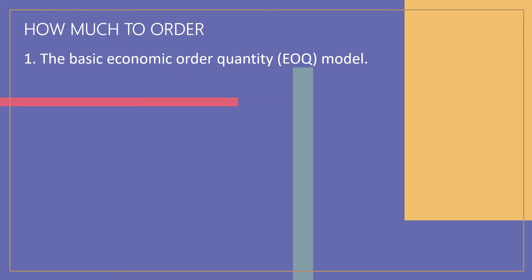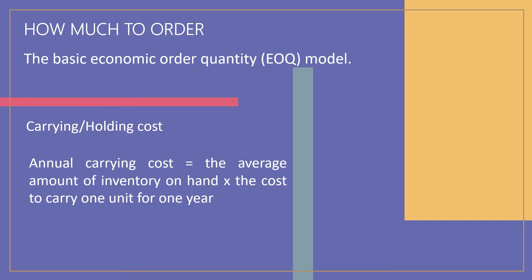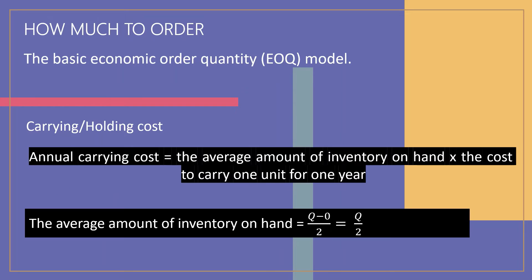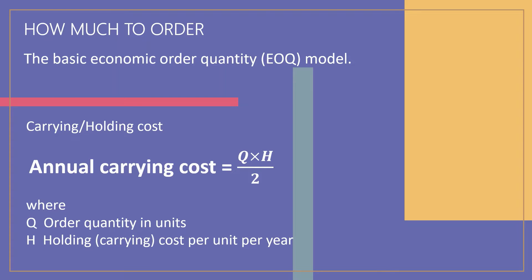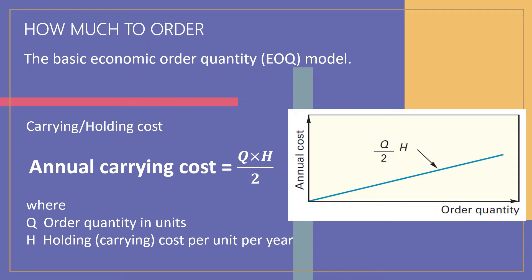Two of the inventory costs studied previously are the carrying (or holding) and ordering costs. Annual carrying cost is computed by multiplying the average amount of inventory on hand by the cost to carry one unit for one year. The average inventory is simply half of the order quantity: the amount on hand decreases steadily from Q units to zero, for an average of Q divided by two. Using H to represent the average annual carrying cost per unit, the total annual carrying cost is Q × H / 2, where Q is the order quantity in units and H is the holding or carrying cost per unit per year. Carrying cost is thus a linear function of Q, directly proportional to changes in order quantity.